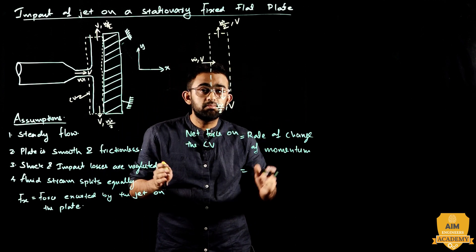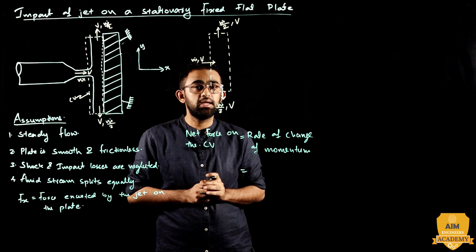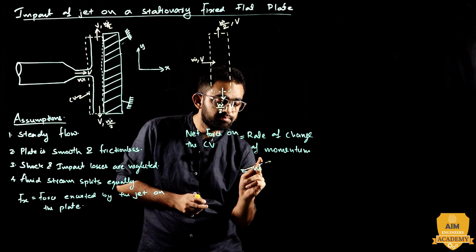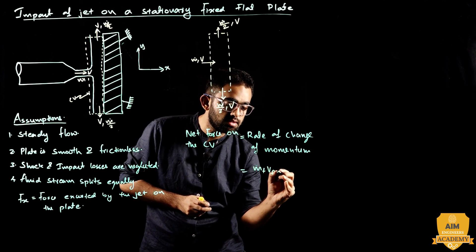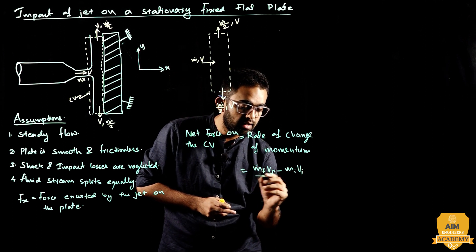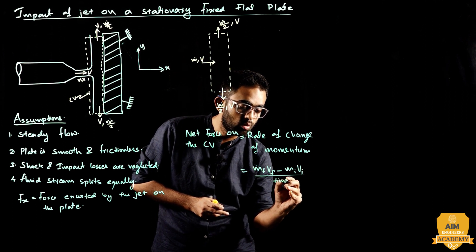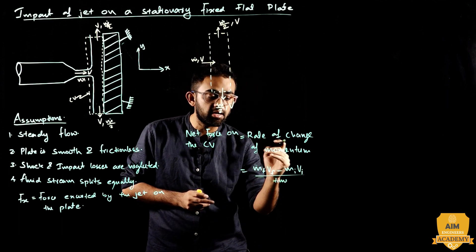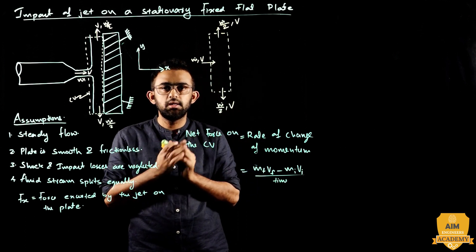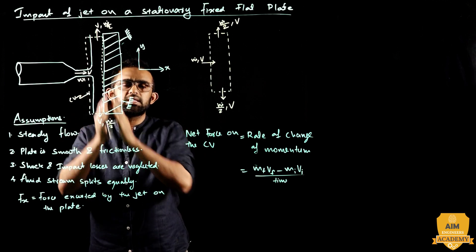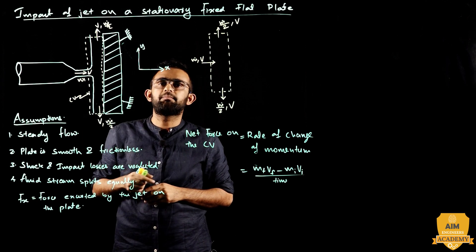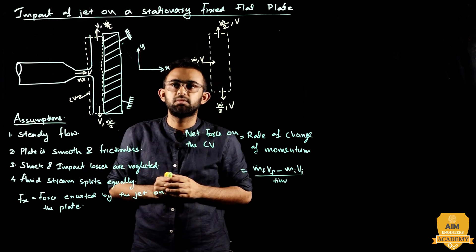Rate of change of momentum means: final mass into final velocity minus initial mass into initial velocity, divided by time — because rate means divided by time. The net force on the control volume: the high-velocity jet hits the plate, so there is a reactive force on the control volume.